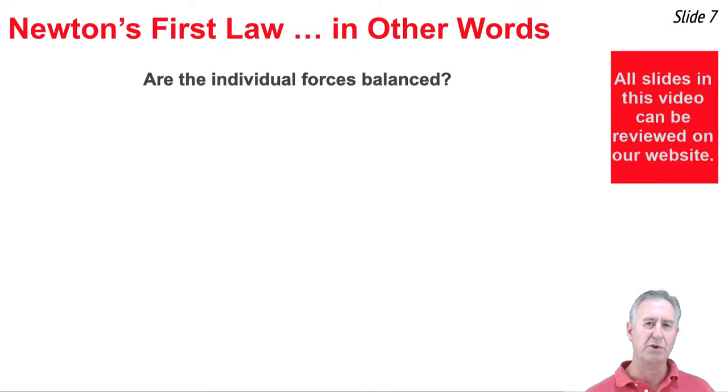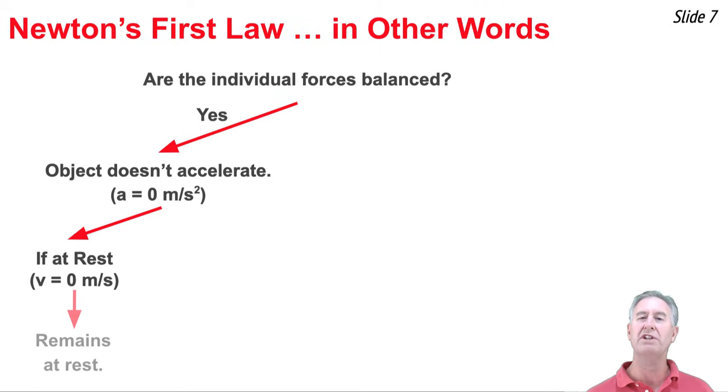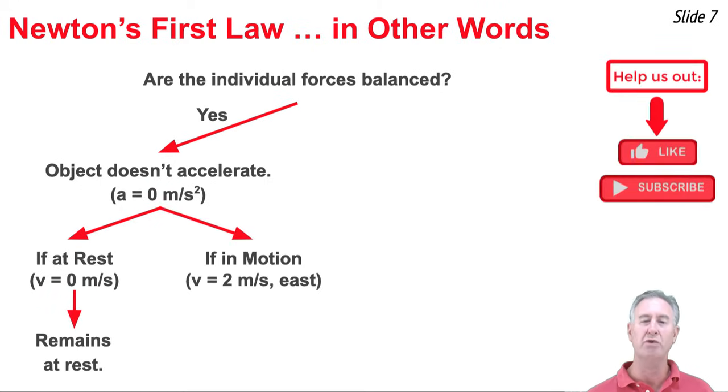So we're back to Newton's first law of motion. And here's another way to put it. The first thing you have to do is ask the question, are all the individual forces acting upon the object balanced? And if the answer to that question is yes, then we're talking Newton's first law of motion. And what we can say is that objects don't accelerate. Their a is equal to zero meters per second squared. Now this can mean one of two things. First it can mean that if the object's at rest with a velocity of zero meters per second, it's going to stay at rest. Or it can mean that if the object's moving, maybe its v is two meters per second to the east, then it's going to continue moving with that speed of two meters per second in the direction of east.